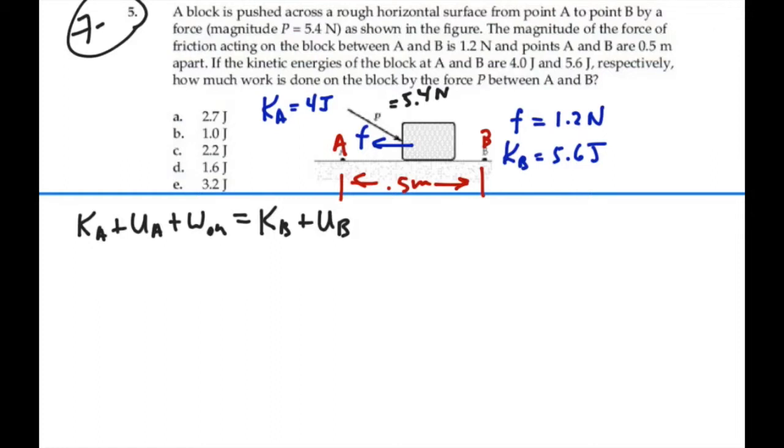If we define our gravitational potential energy as 0 on this plane, then we have no potential energy due to gravity, and there's no springs involved. So, our potential energy at A and our potential energy at B is 0. So, we don't have to worry about those terms.